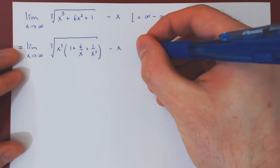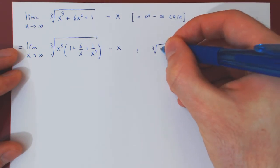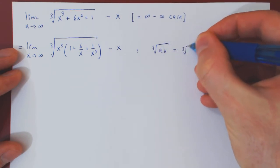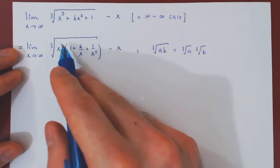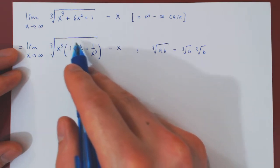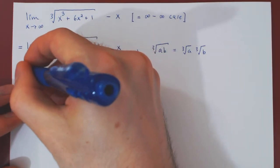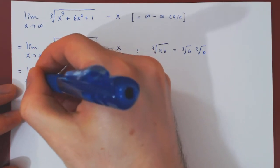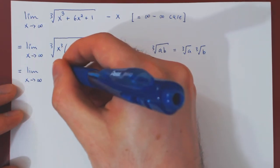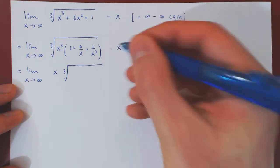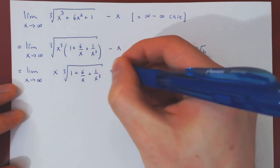Now we can use properties of powers. The cube root of a times b is simply the cube root of a times the cube root of b. So we separate this expression as the cube root of x cubed, which is x, times the cube root of this remaining expression. The cube root of x cubed gives us x, times the cube root of 1 plus 6 over x plus 1 over x cubed, minus x.